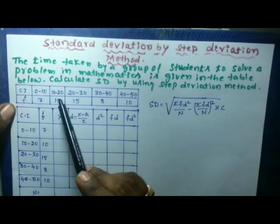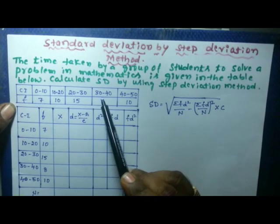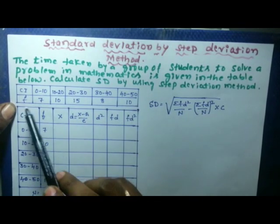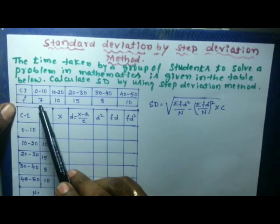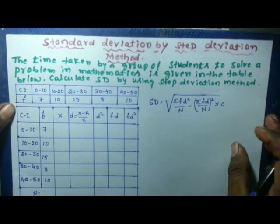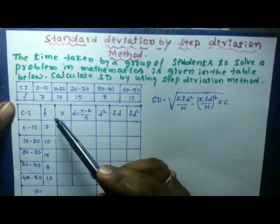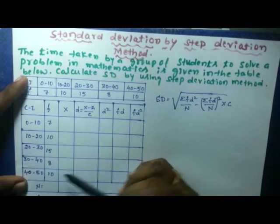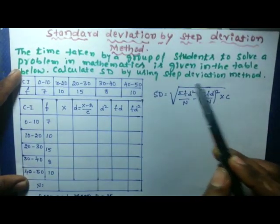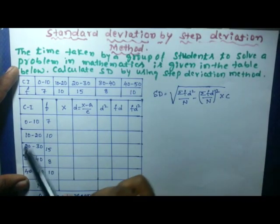The class intervals are 0–10, 10–20, 20–30, 30–40, and 40–50. The given frequencies are 7, 10, 15, 8, and 10. First, write down the table to find the standard deviation.